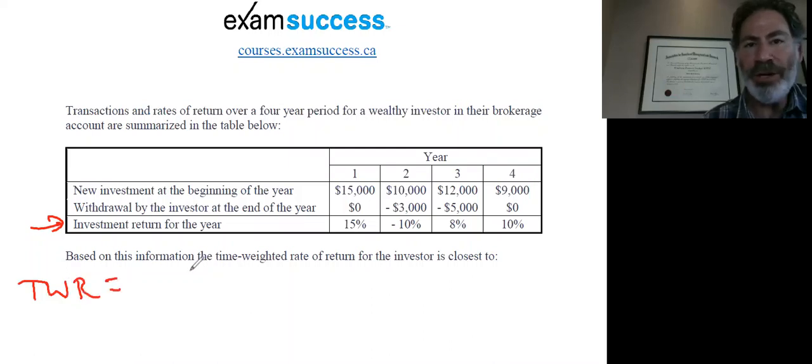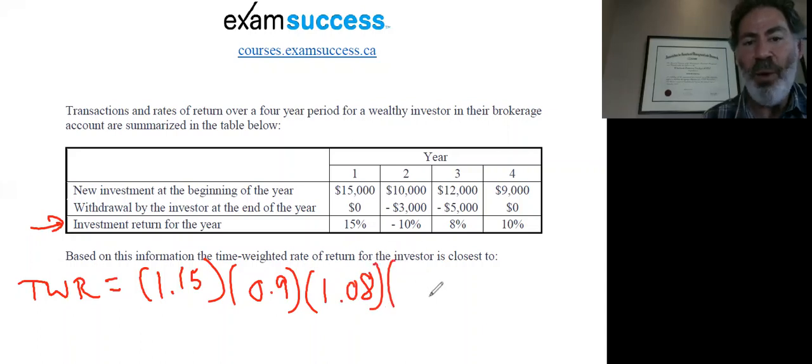So it's one plus the holding period return. So one plus 15%, 1.15, times one minus 10%, that's 0.9, times one plus 8%, 1.08, times one plus 10%, 1.10.